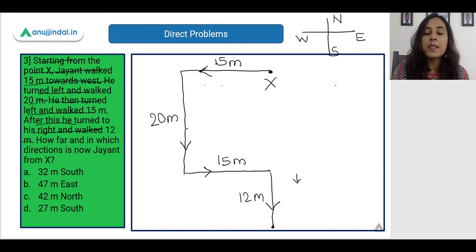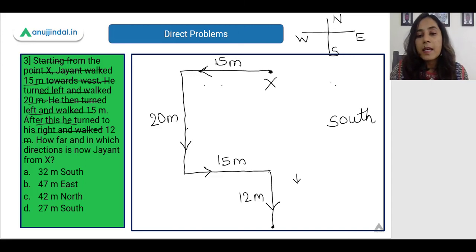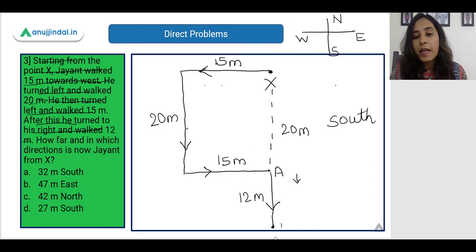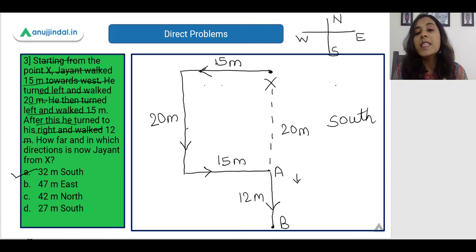How far and in which direction is Jayanth now from X? Jayanth is at the lower side — exactly at the lower side of X — which means Jayanth is at the South from the starting point. If you calculate the distance: let this point be A, so XA is 20 meters because this is a rectangle. The end point is B, so AB is 12 meters. So 20 plus 12 makes 32 meters. The correct answer is 32 meters South.